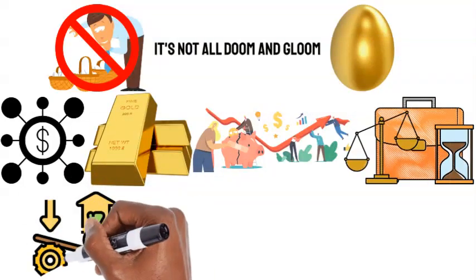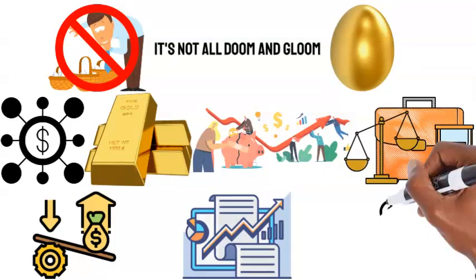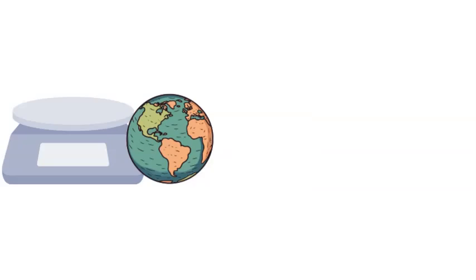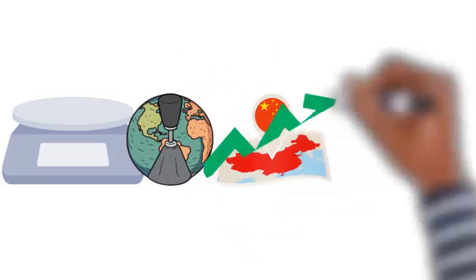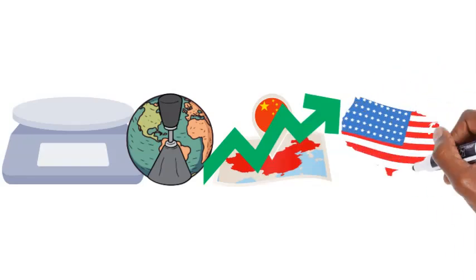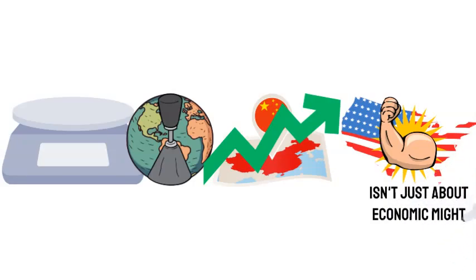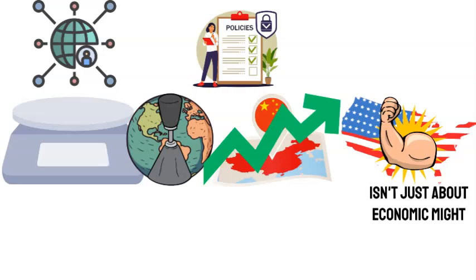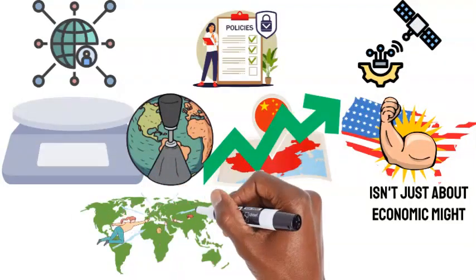Leveraging assets is a strategy that has dominated markets recently, but it also poses inherent risks, underlining the need for diversification. On a macro scale, the globe witnesses significant shifts. China's meteoric rise poses challenges to the established might of the U.S. This scenario isn't just about economic might. It's about global influence, trade policies, and even technological advancements. As nations strive for self-sufficiency...